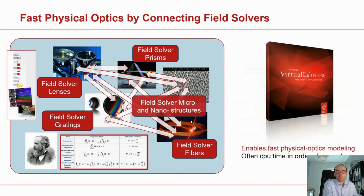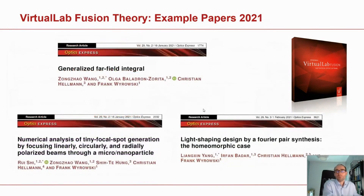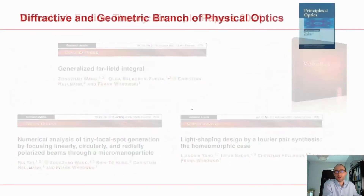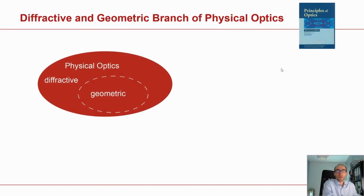By this approach, we enable fast physical optics modeling where CPU time is often on the order of just a few seconds. We also develop a completely new theory for this — here you can see some papers from last year, and this year we are going to publish more. We have a full theoretical background; we don't publish everything because some parts are proprietary, but some concepts are published in peer-reviewed journals. One interesting thing is if you look at the famous book by Born and Wolf, there's a chapter about geometrical optics, and we reinterpreted that concept.